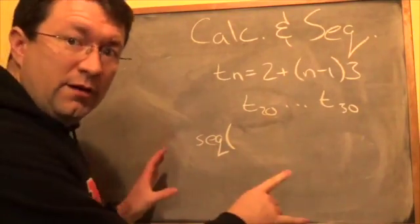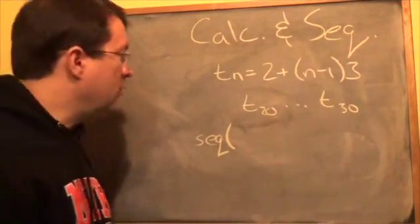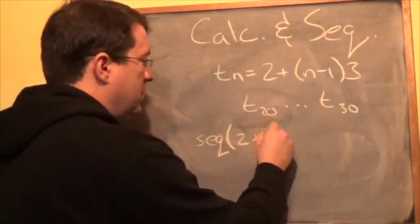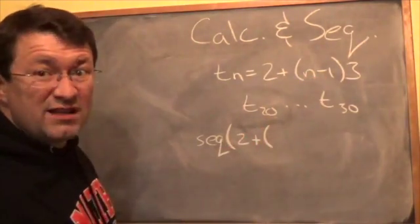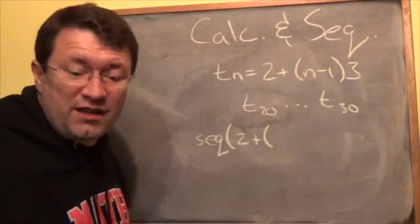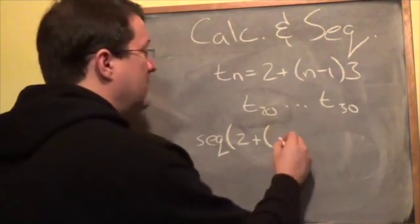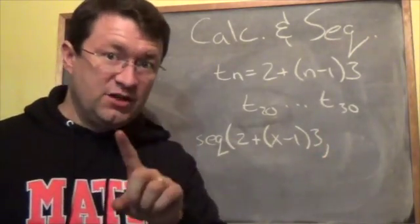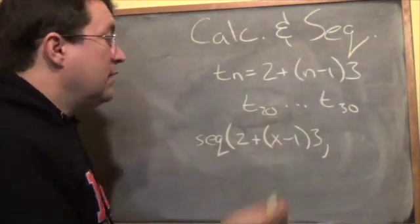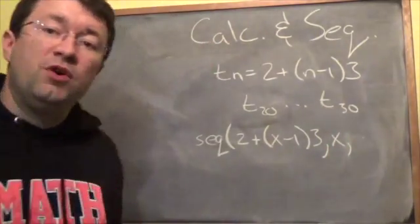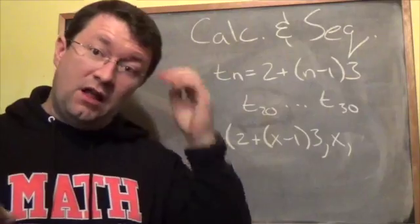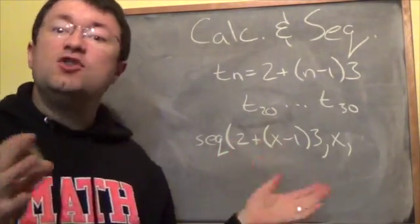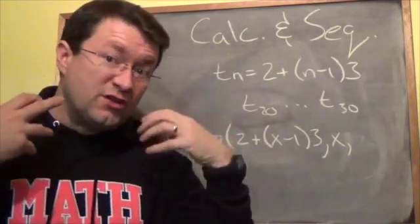I'll draw this up on the board. After choosing seq with the opening bracket, I'm going to enter the sequence: 2 + (x − 1) × 3. I'm using x instead of n because it's easier to use the variable button on the calculator. Then comma, then x — that tells the calculator what the variable is in this expression, as opposed to any other letters it would treat as constants.